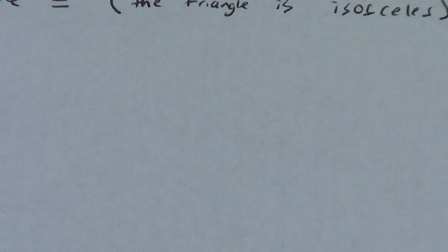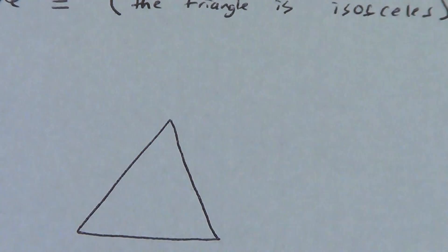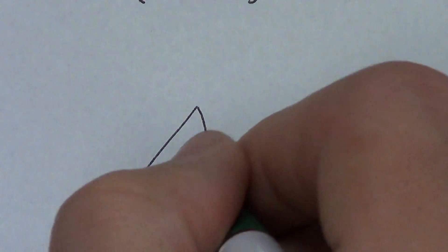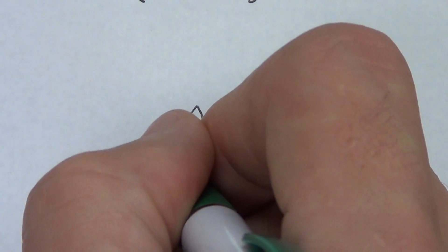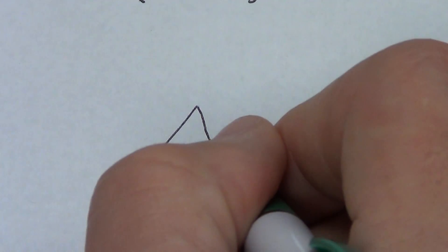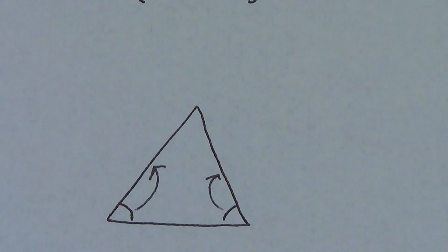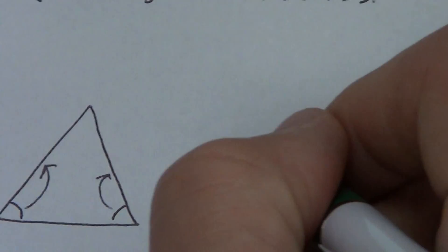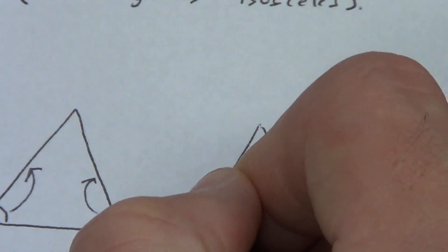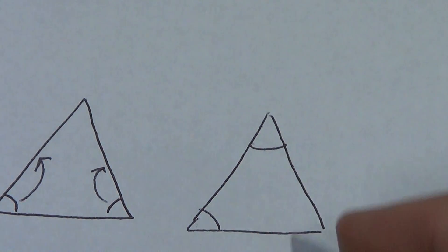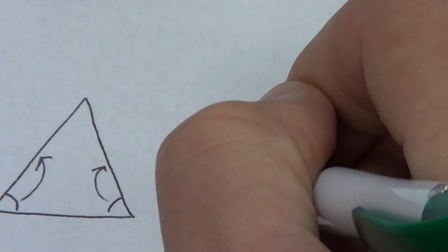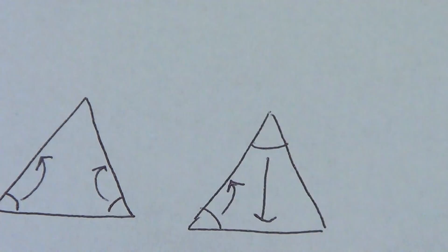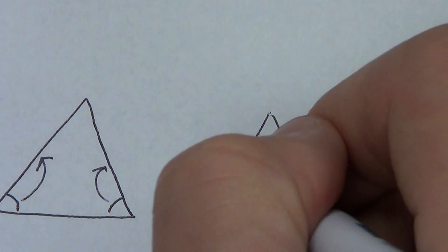What I get every now and then from somebody is something like this. They've got a triangle, I tell them these angles are congruent, and they do something like drawing the arrows in the wrong direction. That's not working your way across the triangle. Those might actually be the correct congruent sides, but that's not the right method. Don't ever work on a curve — you always work straight across your triangle. It makes it very, very simple.